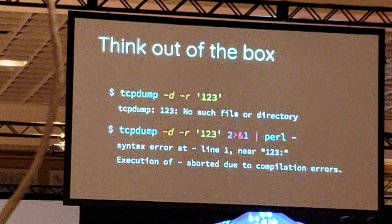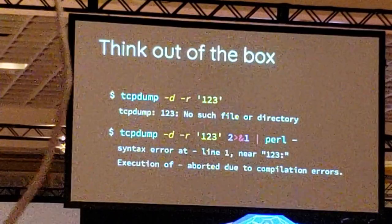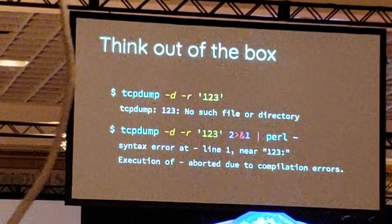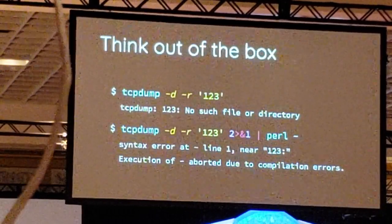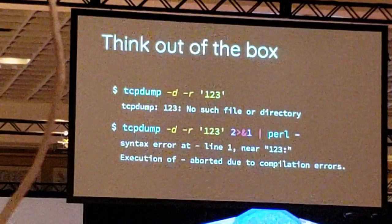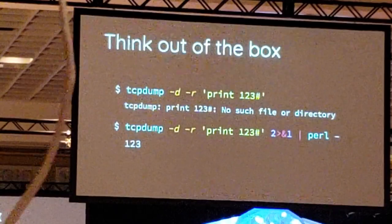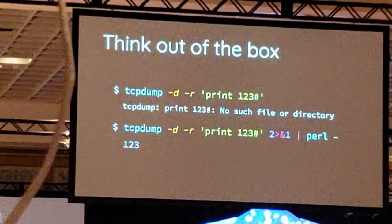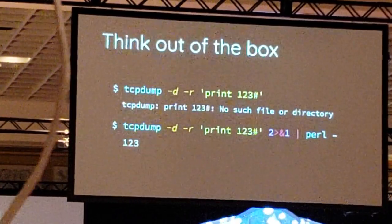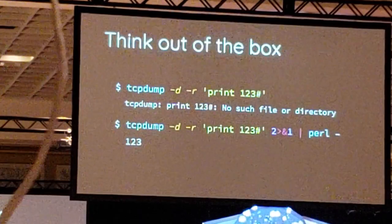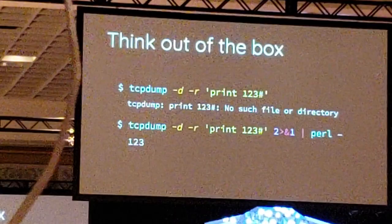When you pass a non-existent file to the Zip opener, it will show the error: 'No such file or directory.' From the error message, it seems we can partially control the messages. We tried redirecting standard error to Perl, but we still got nothing. However, when we tried to use another filename such as 'print123' with a hashbang, we redirected standard error to Perl again — and the magic happened. Perl printed '123' without errors.